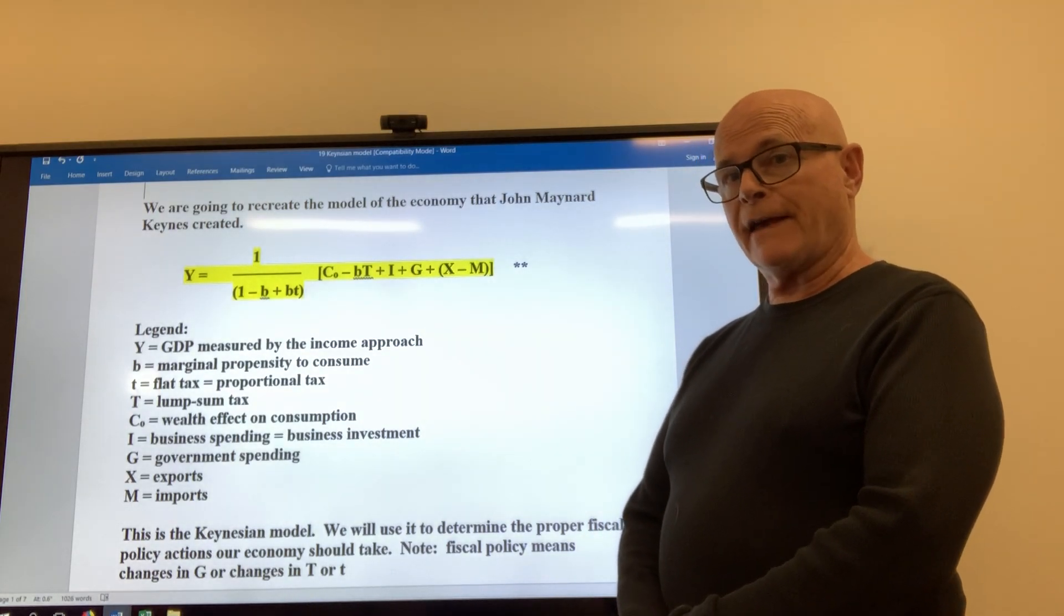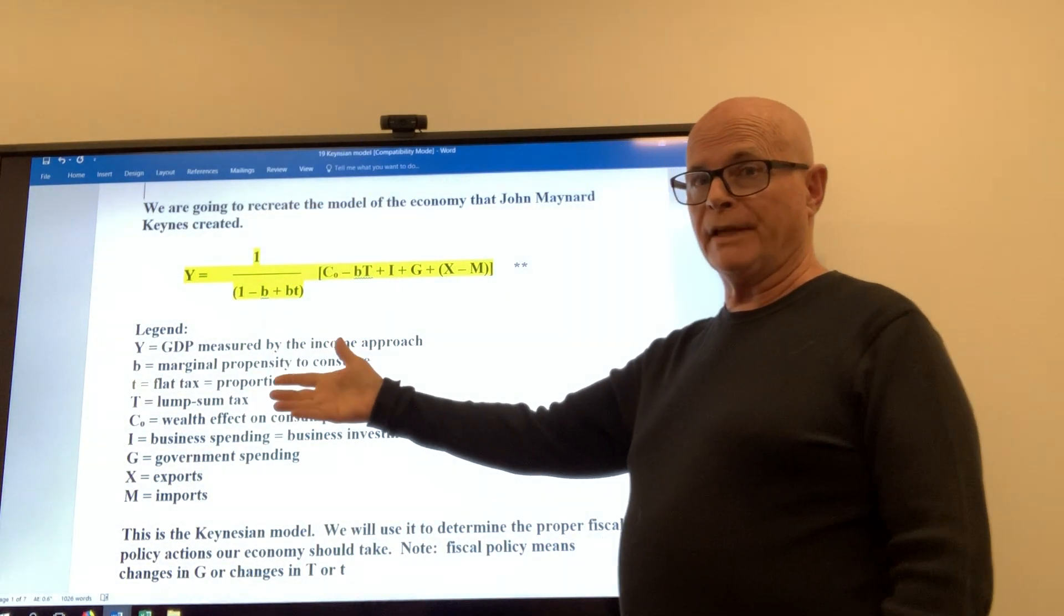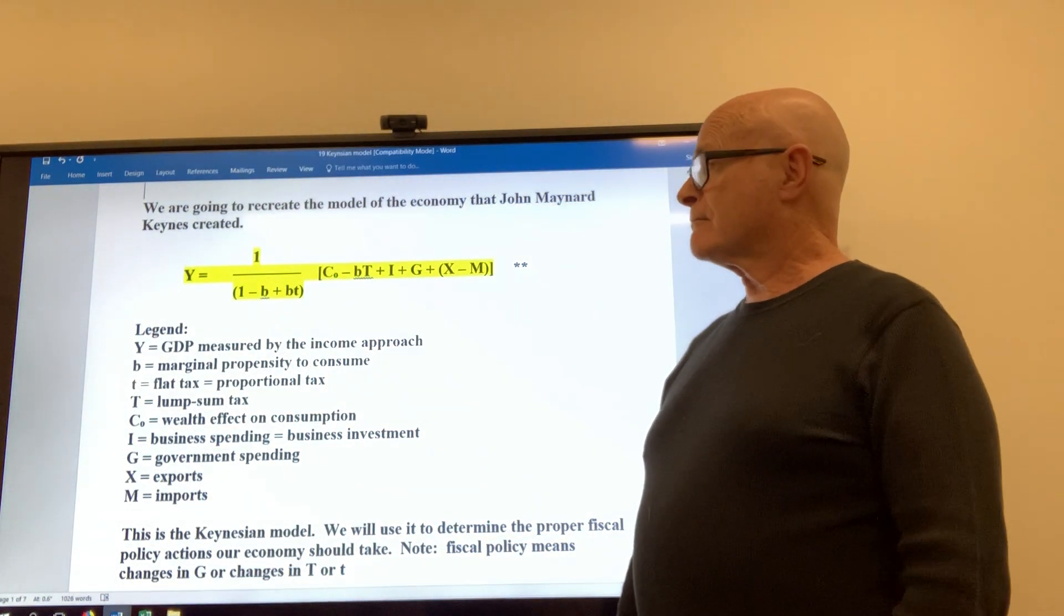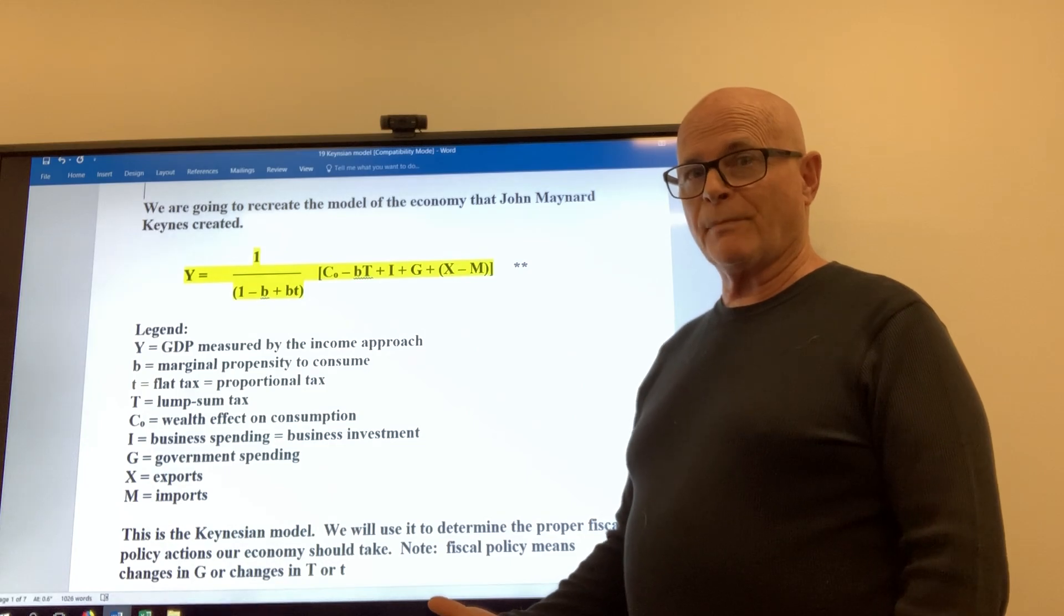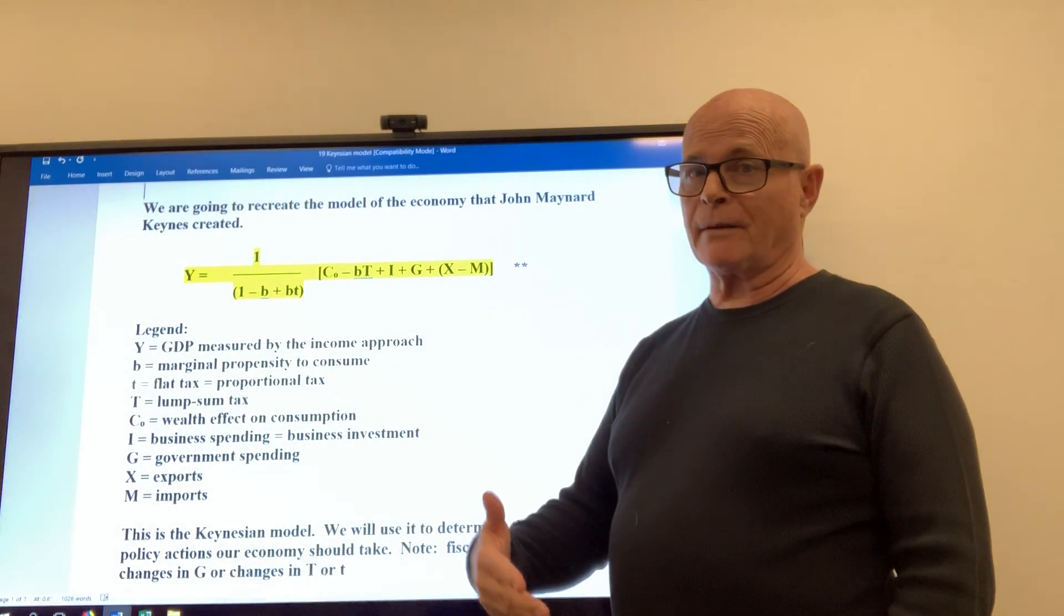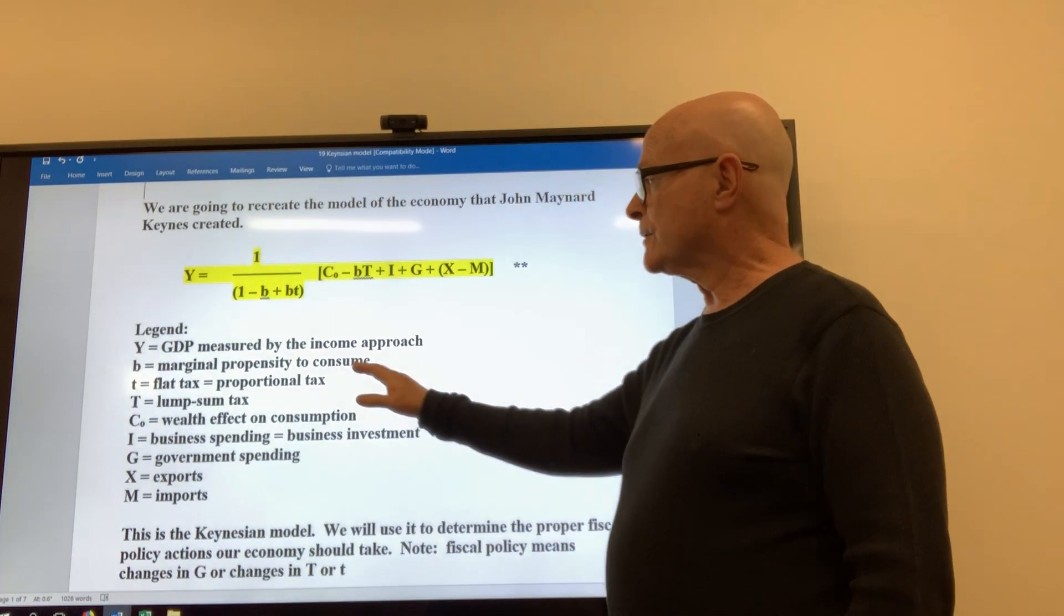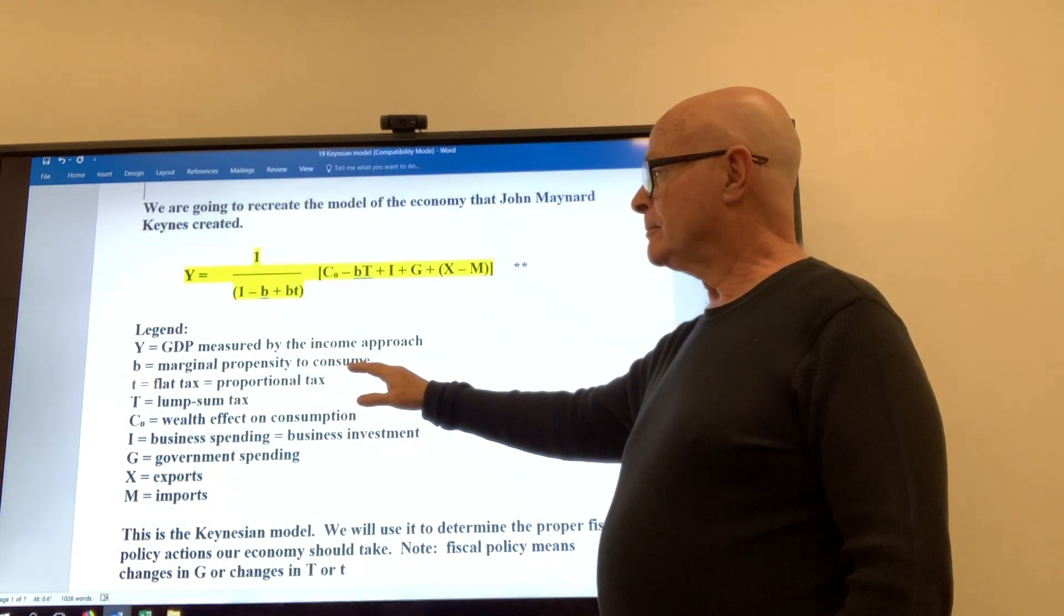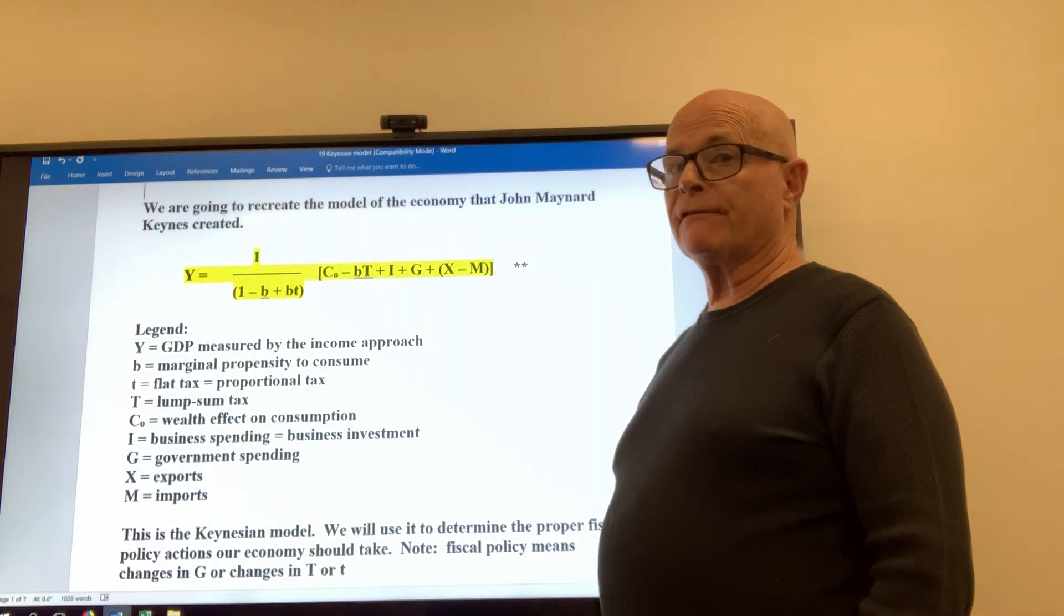So this b is going to be a number between zero and one. One being where you spend the whole dollar, zero would be you spent none of it, 0.5 would be you spend half of it. If you don't spend it, what happens to the part you don't spend? It becomes saved. So your spending plus your saving would equal the whole dollar. We're looking at the part that you're spending, probably around 0.95 or so for our country.